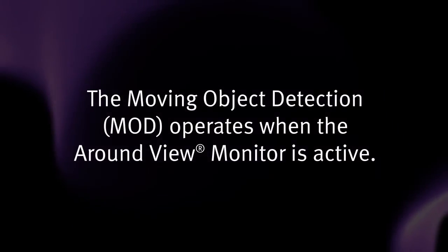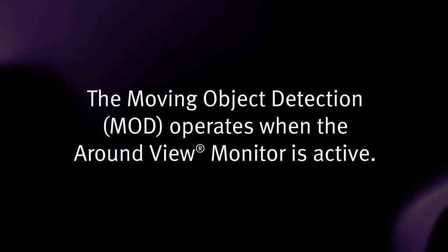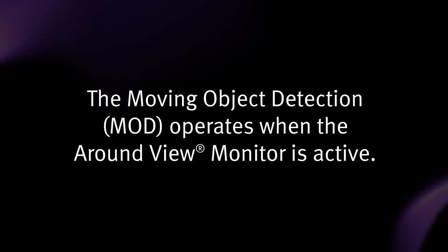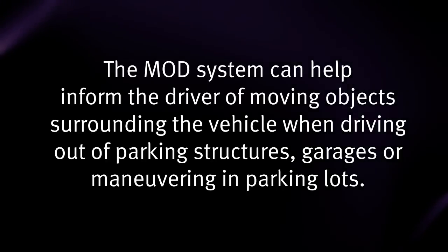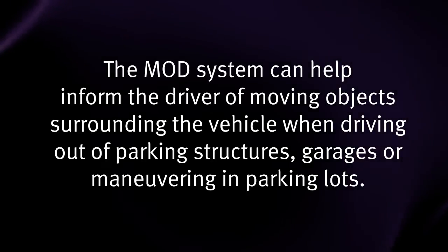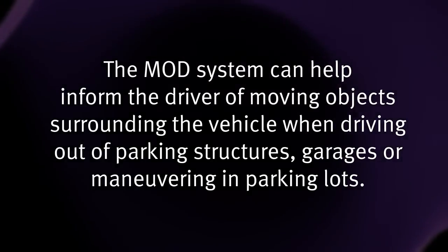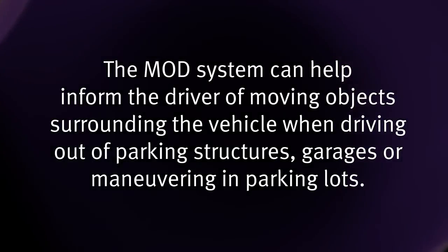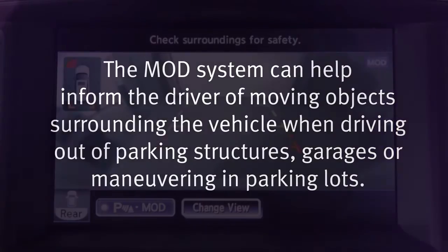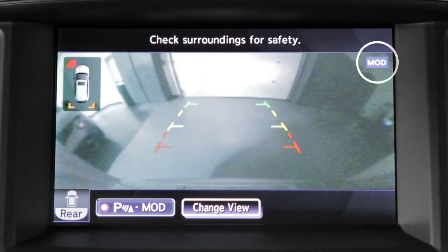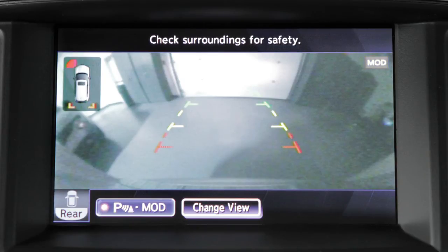The moving object detection system operates when the Around View Monitor is active and can help inform the driver of moving objects surrounding the vehicle when driving out of parking structures, garages, or maneuvering in parking lots. A blue MOD icon is displayed on the screen when the MOD system is operative, and a grey MOD icon is displayed when the MOD system is not operative.